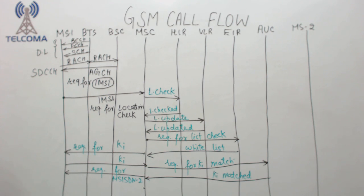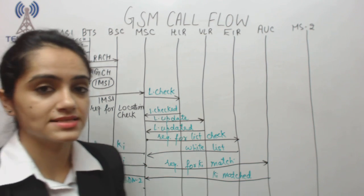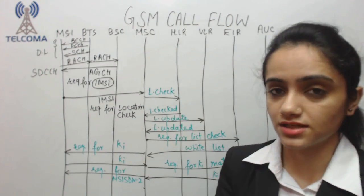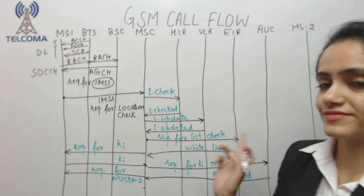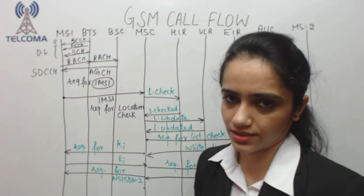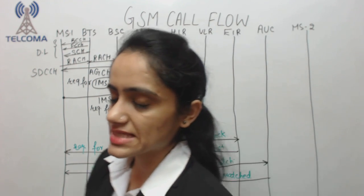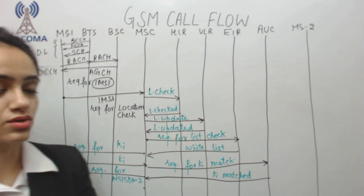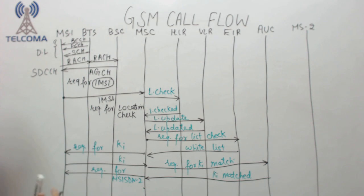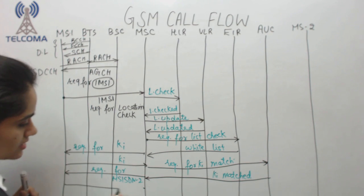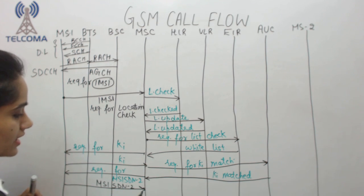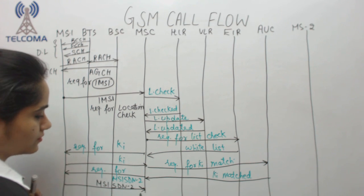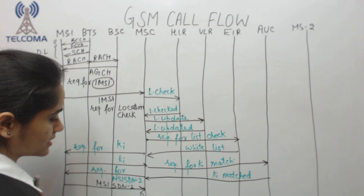Now the MSC requests the MSISDN — the Mobile Subscriber Integrated Services Digital Number — which is essentially the contact number of the second party we want to connect to. The MSISDN is the entity that enables connecting the call. In response, the MSISDN is sent back to the MSC.